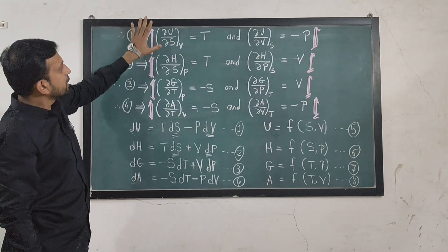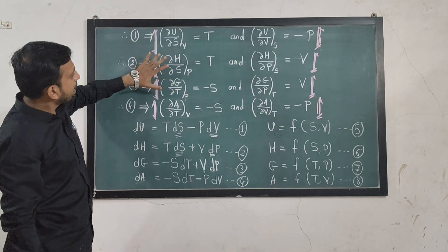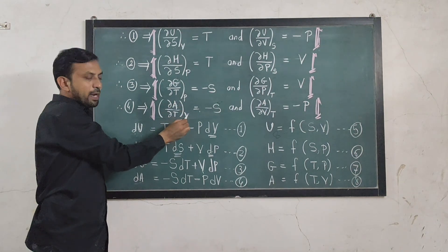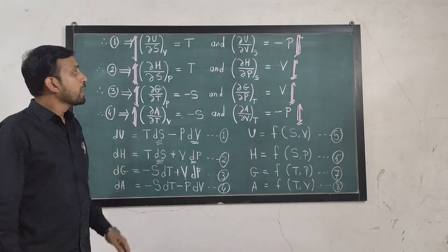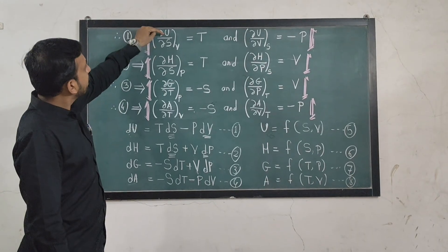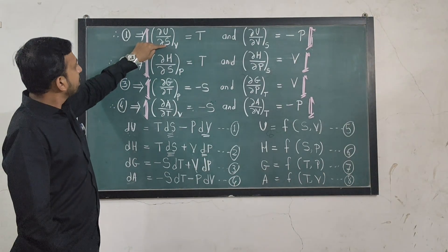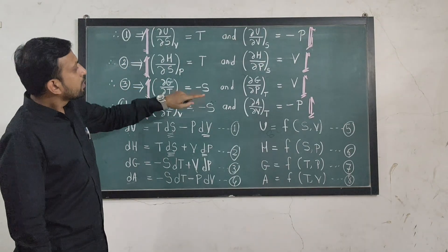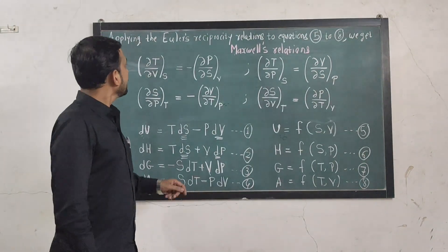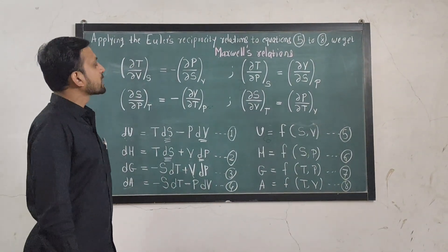In the same fashion, from equations three and four we can write: ∂U/∂S keeping volume constant, ∂H/∂S keeping pressure constant, ∂G/∂T keeping pressure constant, and ∂A/∂T at constant volume. Each of these four equations gives us the idea of how each dependent variable U, H, G, and A changes with respect to the independent variables, entropy, temperature, volume, and pressure. Applying Euler's reciprocity relations to equations five through eight, we get the most important relations known as Maxwell relations.